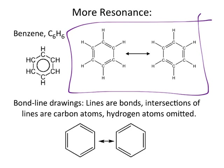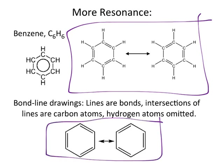In the previous video, we talked about bond line drawings, and here's just another example of how you would draw bond line drawings: the intersection of each of these is a carbon atom, and hydrogens are not shown. So if a carbon is going to have a zero formal charge, it needs to make four bonds, and there are three bonds to other carbons, which means there are hydrogens attached to all of these carbons as well.